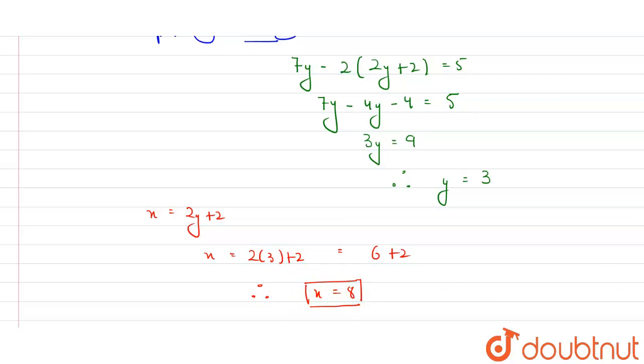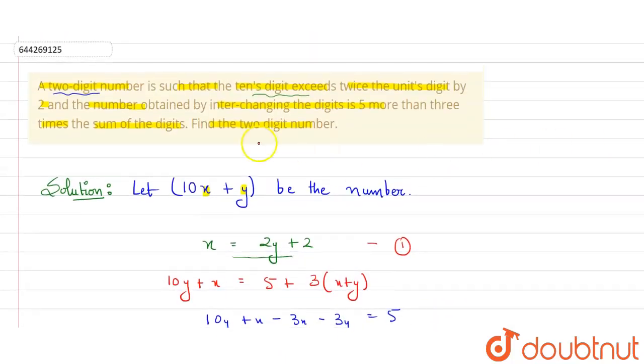Now we are having value of x and value of y, but we have to find the two-digit number. What was the two-digit number? 10x + y was our number. So 10 times the value of x, which was 8, plus the value of y, which was 3, equals 80 + 3 = 83. So our final answer is 83. The number that was supposed to be found was 83. This is our final answer. Thank you.